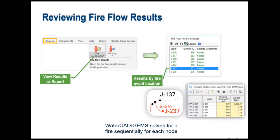Once you run the model you get fire flow results of two general types. One is a node-by-node summary of the available fire flow at each node in your selection set. The other is the fire flow results browser, where you can see whether constraints were satisfied and zoom in to see how water was moving during each run to spot bottlenecks.